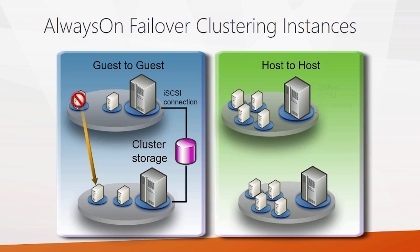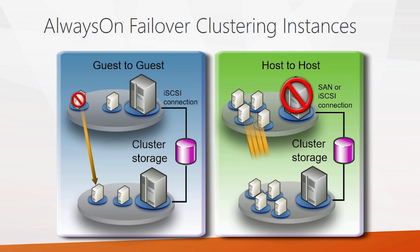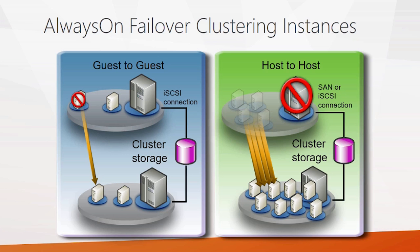In addition, failover clustering can also be used to protect the virtualization host itself. So for instance, if there's a host failure — and virtualization can sometimes have a single point of failure — you could have your hosts on a Windows Failover Cluster network and all your virtual machines could failover from one host to the next. With Windows Server 2012 and 2012 R2, you can have clusters of up to 64 different nodes.